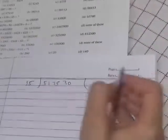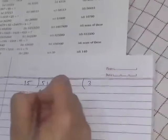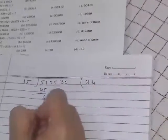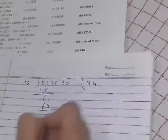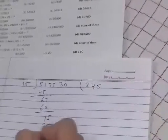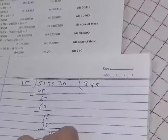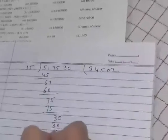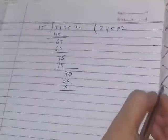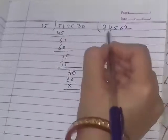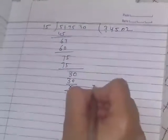15 divided. 15 threes are 45, 15 fours are 60, 7 carry 5, 15 fives are 75. Then we take carry 3, it will not divide, then we put 0 and carry 15 to the 30. So from 517000, 34,502 are literate persons.